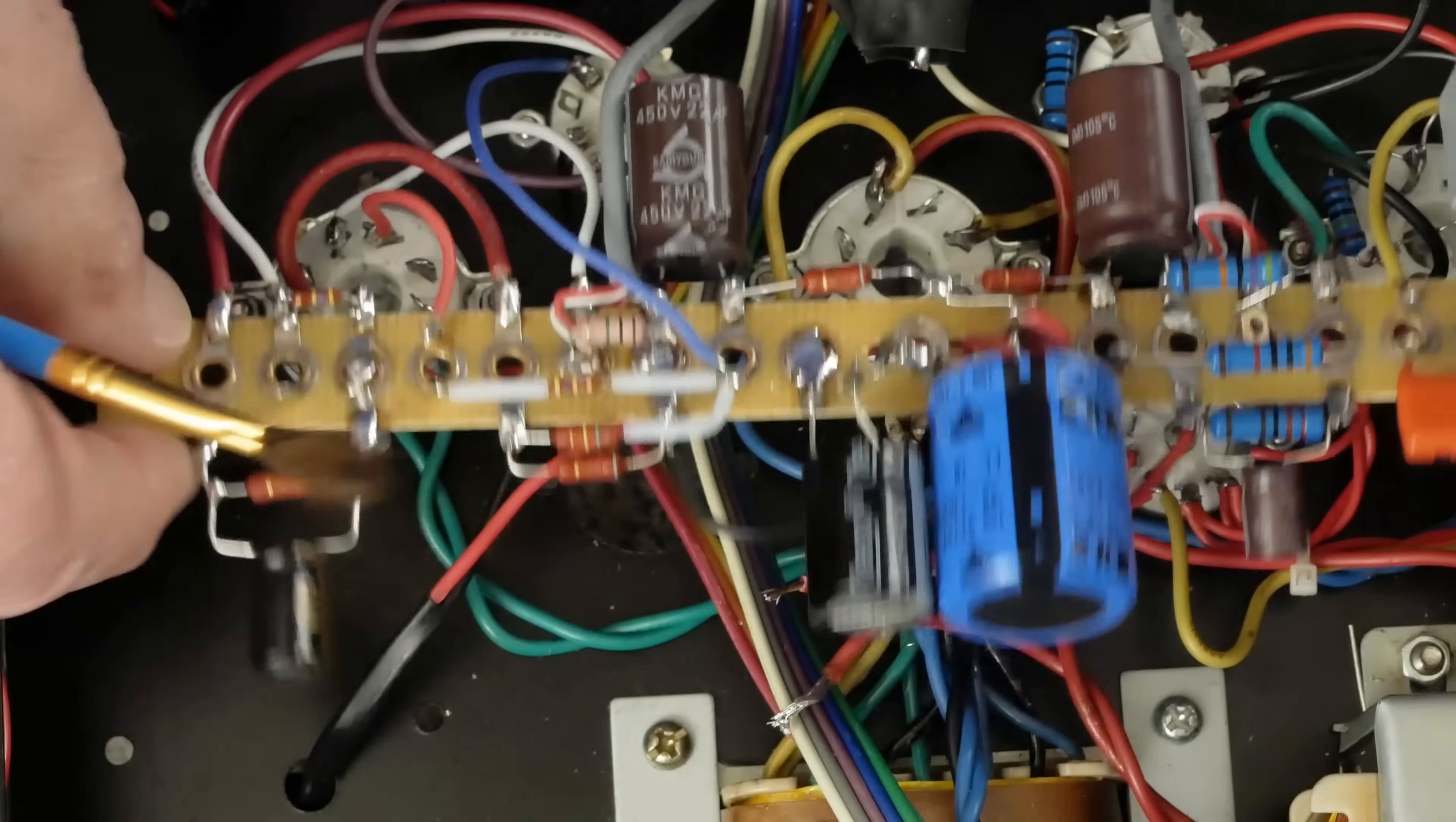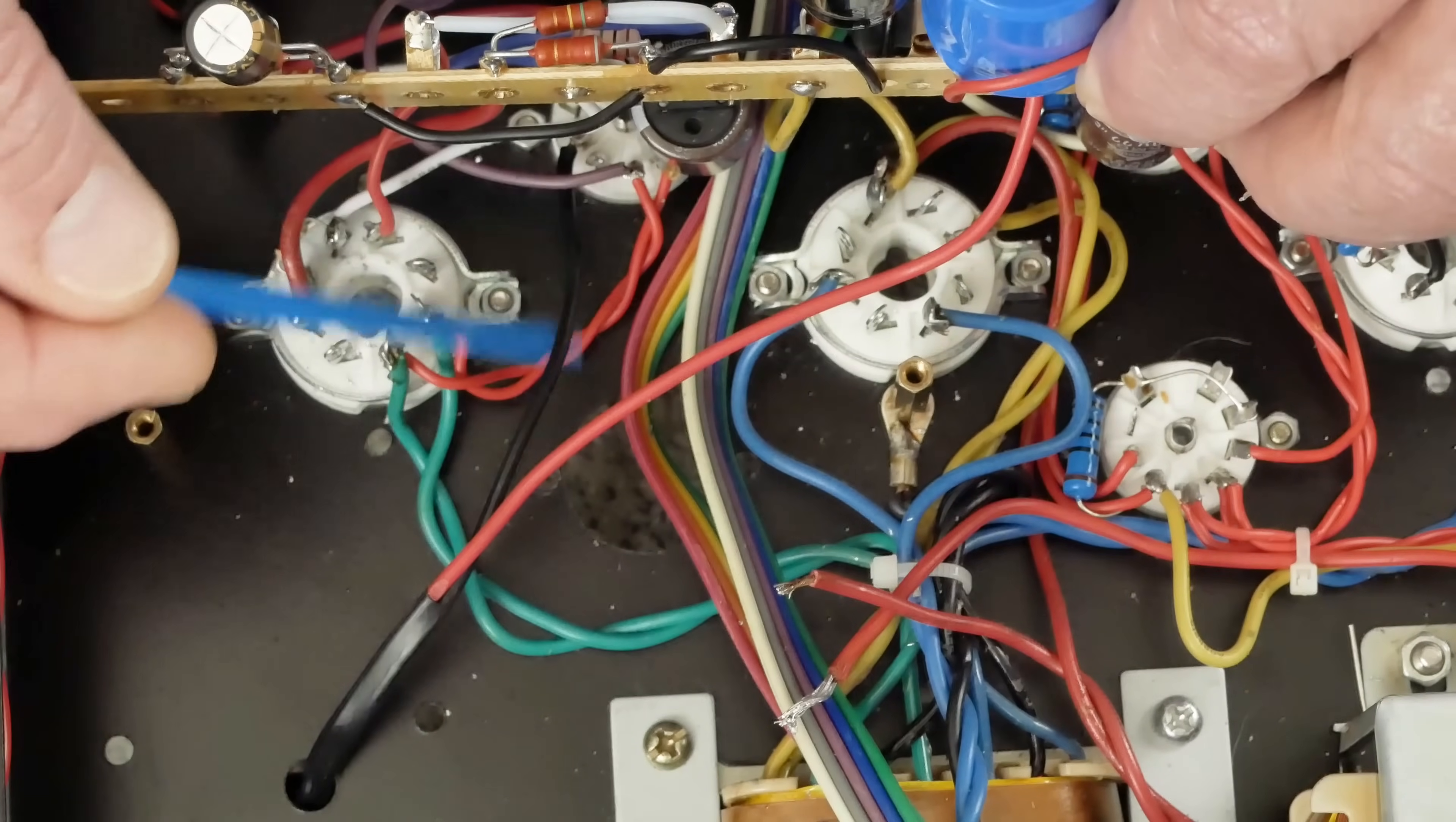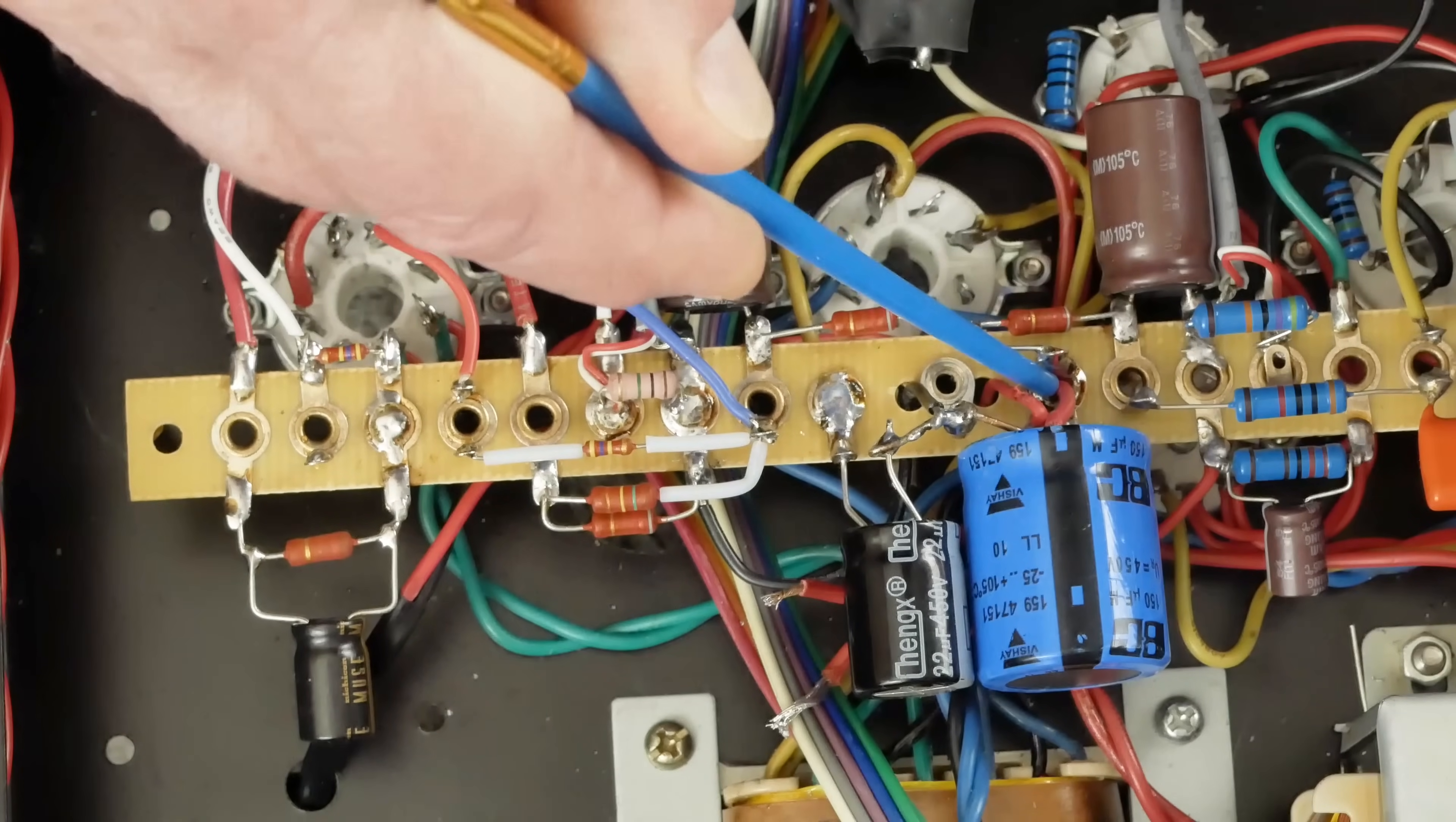So you can see under here, this is the output transformer wire, and this black wire goes to the plate of the output tube. This red wire is going to connect to this point right here, which is the high voltage DC off the choke.